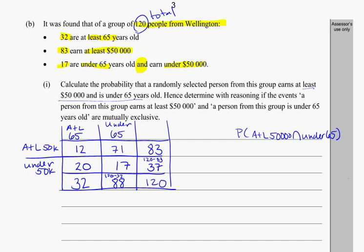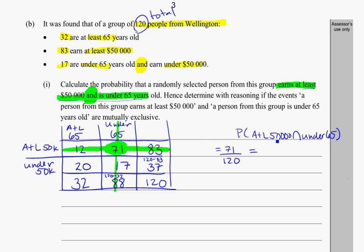The question asks for the probability of randomly selecting someone who earns at least $50,000 and is under 65. Earning at least $50,000 is this row, and under 65 is this column, so that's where the two meet up. I've got 71 people out of 120, so the probability is equal to 71 divided by 120. You can leave that as a fraction or put it into a decimal: 0.5917 to 4 decimal places.